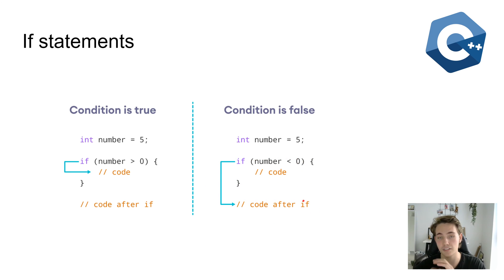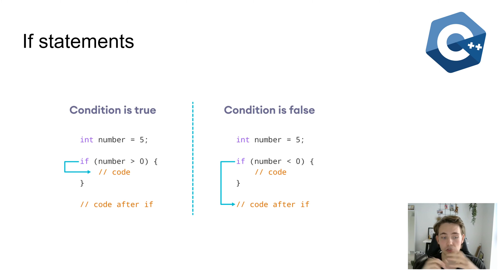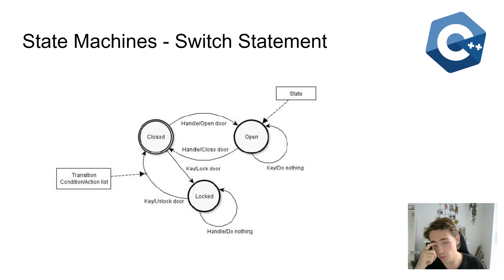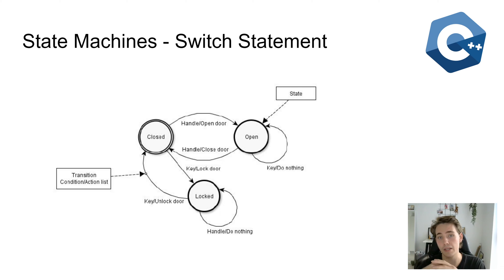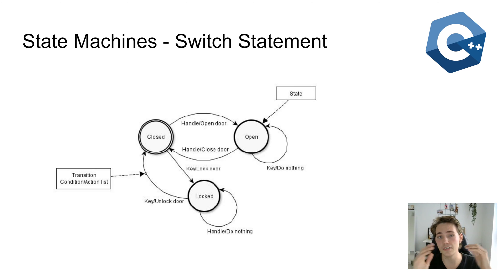It will go to the next lines after the if statement. So if some condition is true, we can use an if statement to do something in our program or application when that condition occurs. We can use if statements for a lot of different kinds of things in C++ and in programming in general. When we are making more complex applications or programs, we can use if statements as state machines.